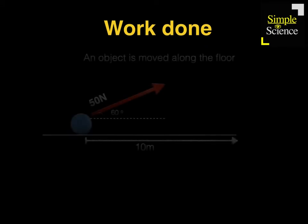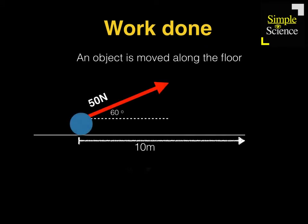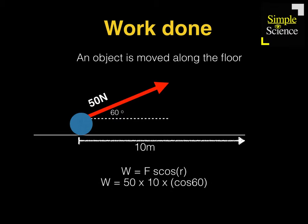Now let's look at a quick example. An object is moved along the floor with a 50 Newton force raised at 60 degrees from the horizontal and moves 10 meters. Using the formula, we have 50 Newtons times cos 60 times 10 meters, and you should get 250 joules of work done by the force.